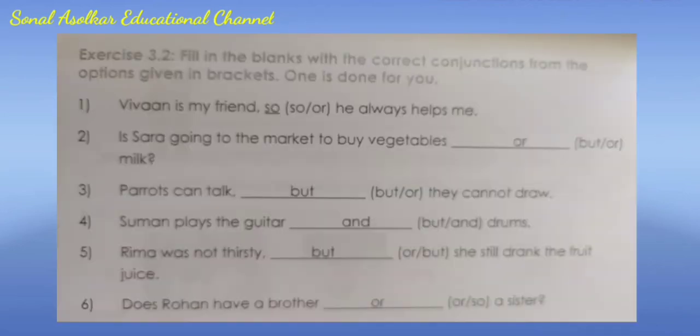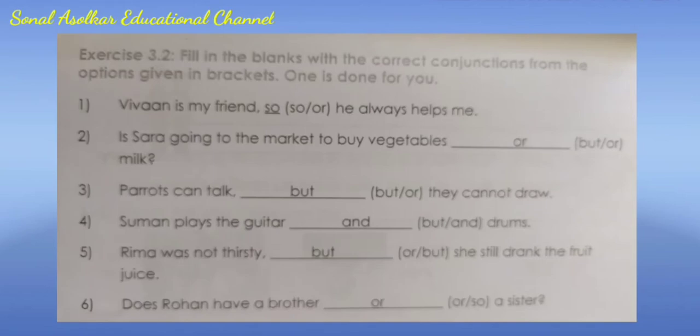Exercise 3.2 - Fill in the blanks with the correct conjunctions from the options given in brackets. 1) Vivan is my friend so he always helps me. 2) Is Sarah going to the market to buy vegetables or milk? 3) Parrots can talk but they cannot draw. 4) Suman plays the guitar and drums. 5) Rima was not thirsty but she still drank the fruit juice. 6) Does Rohan have a brother or a sister?